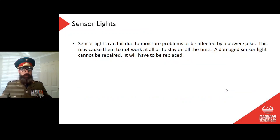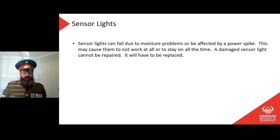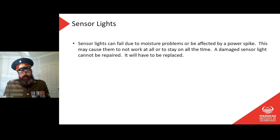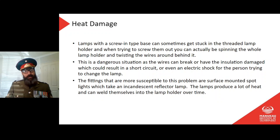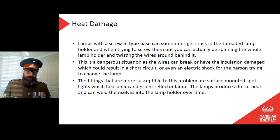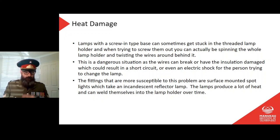Sensor lights can fail due to moisture problems or power spikes, causing them not to work at all or to stay on all the time. A damaged sensor light cannot be repaired — it must be replaced. Heat damage is also a concern: lamps with a screw-in base can get stuck in the threaded lamp holder, and when trying to remove them you may spin the whole lamp holder and twist the wires behind it, potentially breaking wires or damaging insulation, which could cause a short circuit or electric shock. Surface-mount spotlights with incandescent reflector lamps are particularly susceptible — the heat can weld the lamp into the holder.